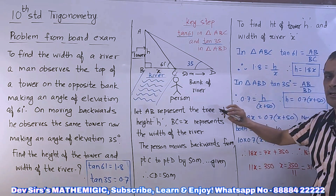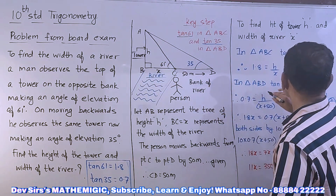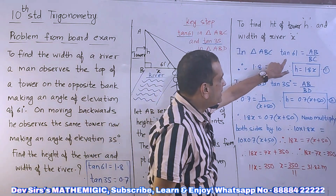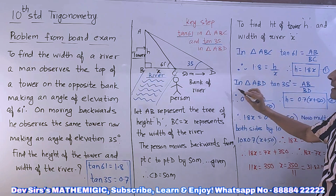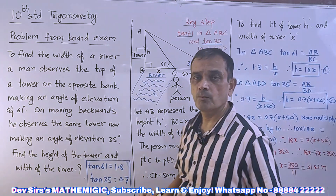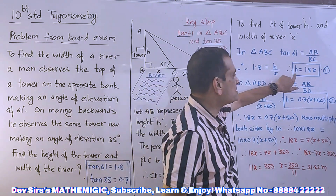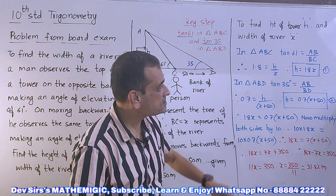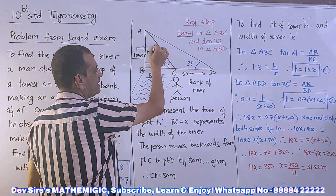In triangle ABC, tan 61 equals opposite side upon adjacent side, which is AB upon BC. The value of tan 61 is given as 1.8, so 1.8 equals h upon x — since AB is h and BC is x. Cross-multiplying, we keep h on one side: h equals 1.8x. That is our first equation. We cannot get a direct answer yet because both h and x are unknown.